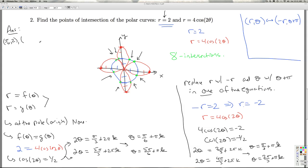So pi over 6, 2, and then 7 pi over 6, 2, then 5 pi over 6, 2. So those are the four answers I get out of this one.